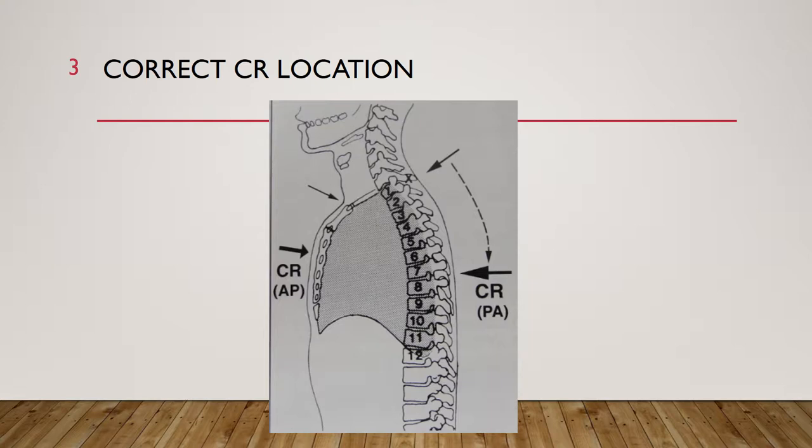T7 is where we center for a PA chest. Located posteriorly, in reference to C7 — the vertebral prominence — the level of T7 is about seven to eight inches below the vertebral prominence. You want to palpate the vertebral prominence and then find T7. T7 is also usually at the apex of the scapula.